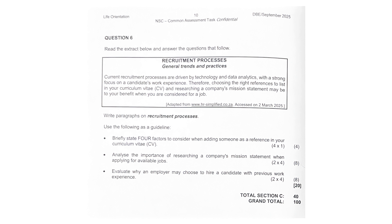Question six — briefly state four factors to consider when adding someone as a reference in your CV: choose a reference who knows your professional abilities and character; ensure they're reputable and hold a respectable position; ask for permission as well; and provide accurate and updated info so it's easy to contact them. Next, analyze the importance of researching a company's mission statement when applying for available jobs — two points. Alignment with company culture: understanding a mission statement, the whole VMGO thing, allows applicants to assess whether their values match the organization's ethos, ensuring job satisfaction and long-term commitment if hired. Tailoring applications: researching a mission statement helps applicants personalize cover letters and interviews, and employers are therefore more likely to hire candidates who demonstrate understanding of the organization's goals.